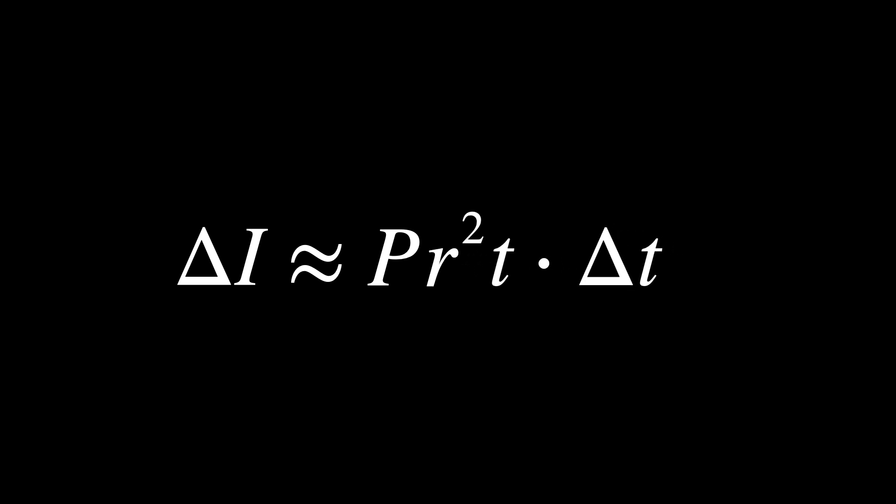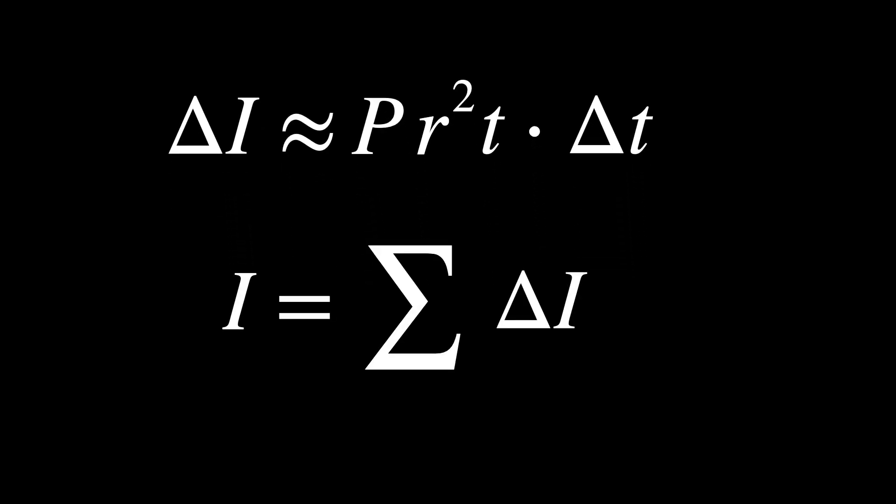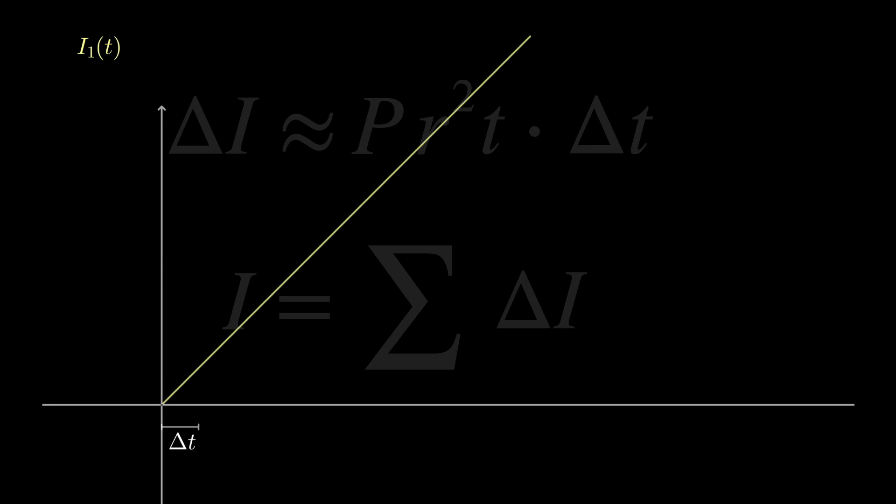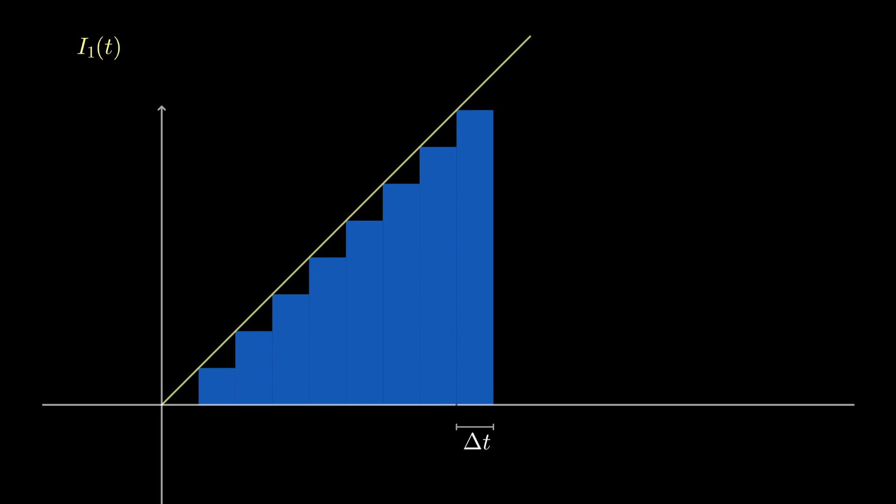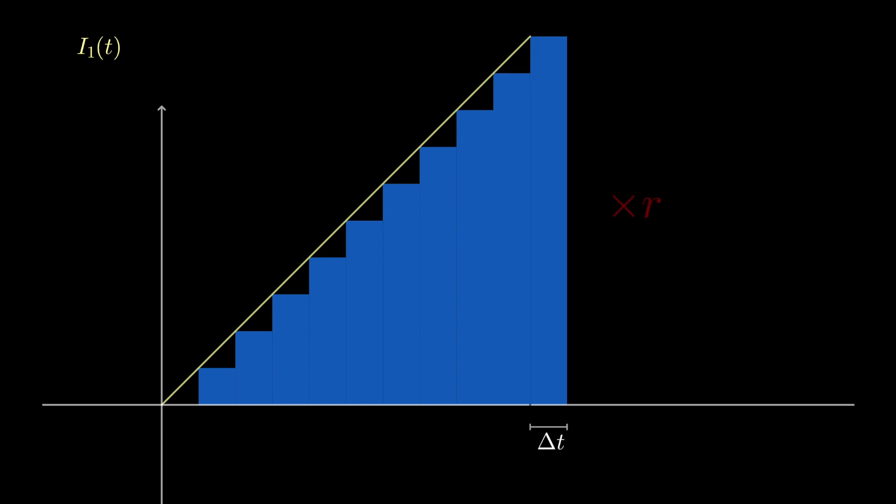The total interest earned is just the sum of all these slices of interest. Notice that we can think of the secondary interest as slices of the primary interest, added up over time, and then multiplied by the rate, R.